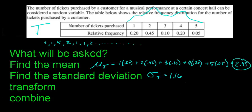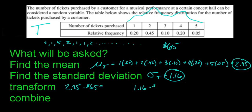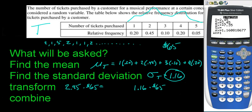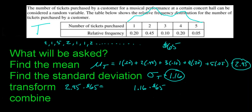We could also ask you to transform the variable. If each ticket costs $65, how much money do we expect to make? You take the 2.45 expected tickets and multiply by $65 to get your mean in dollars. You also take the standard deviation of 1.16 tickets and multiply by $65 to get your standard deviation in dollars. So 2.45×65 = $159.25 expected, and 1.16×65 = $75.40 standard deviation. Multiplying affects both mean and standard deviation.